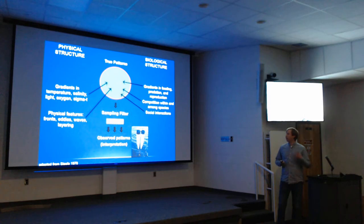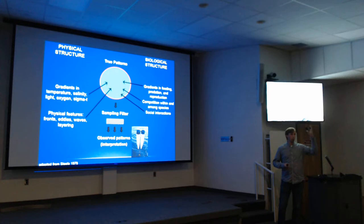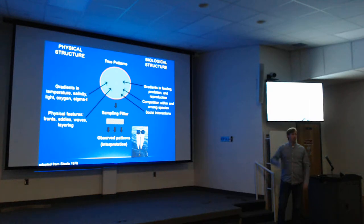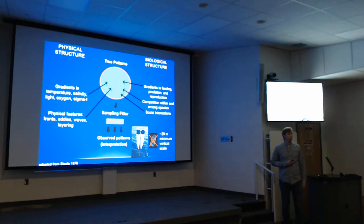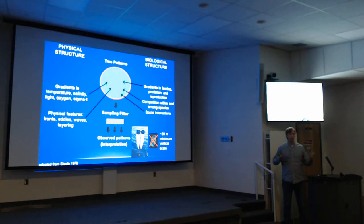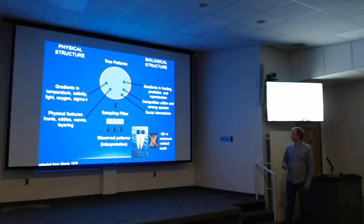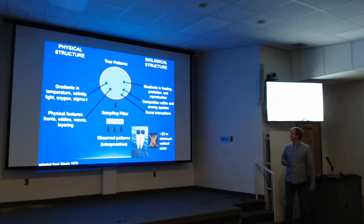We can't really see what's happening in the real world — we have to use some kind of sampling filter. For a long time, that's been net-based systems. This is a bongo net towed vertically through the water column. You don't really know exactly where that sample came from. Gelatinous or fragile organisms aren't well sampled by the net system, and the minimum vertical scale you can resolve is on the order of about 5 to 10 meters.